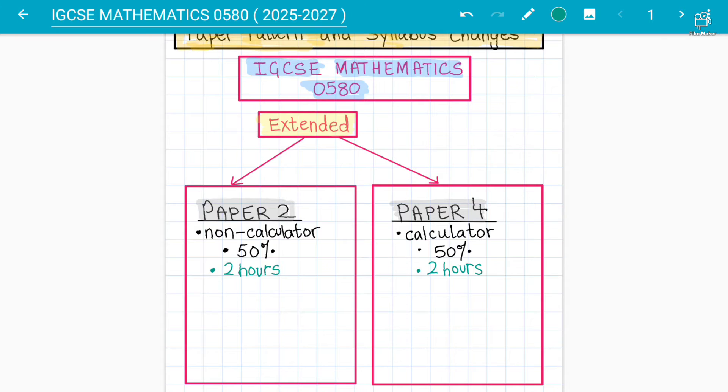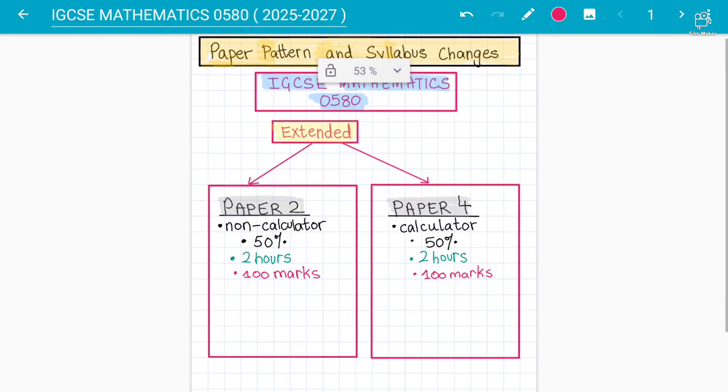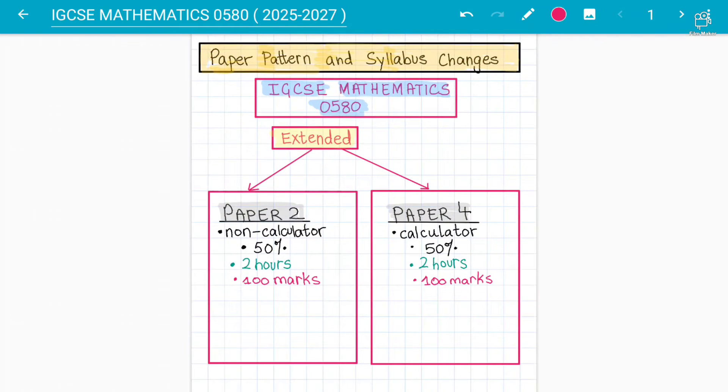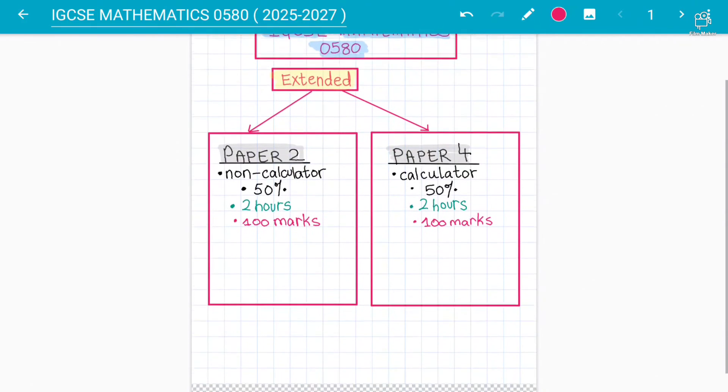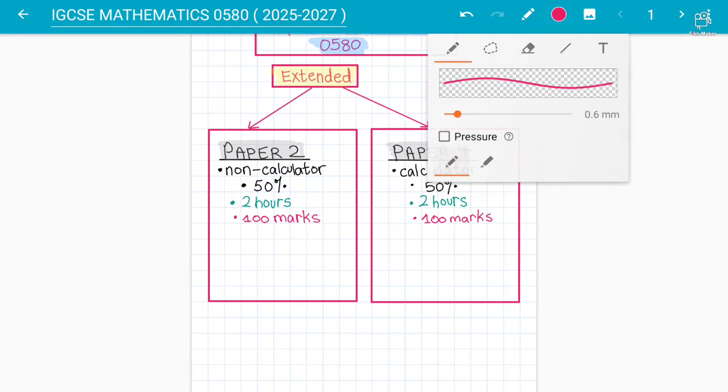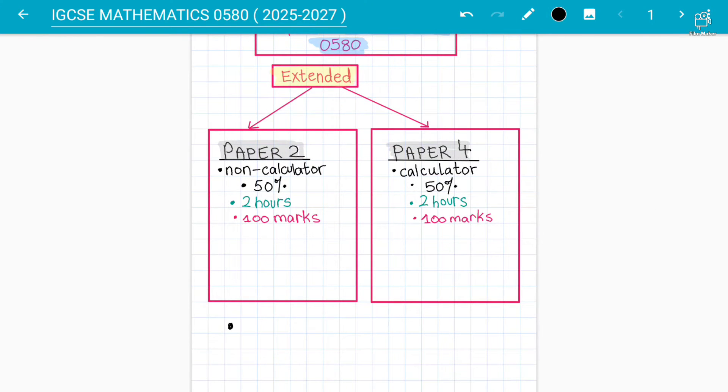Both of the papers will be two hours each and each paper will be of 100 marks. So each paper will be of 100 marks, Paper 2 as well and Paper 4 as well will be of 100 marks. This is paper pattern that we are discussing in summarizing form. Both of them have equal weightage, equal number of marks, 100 marks each, both of the papers will be two hours each.